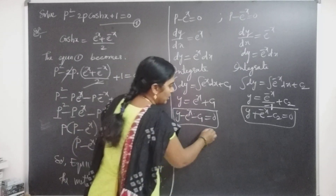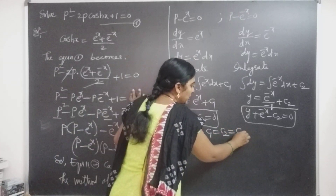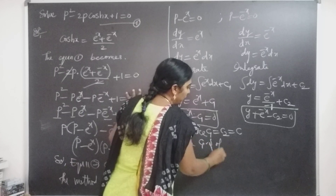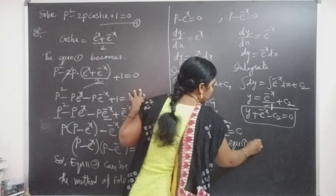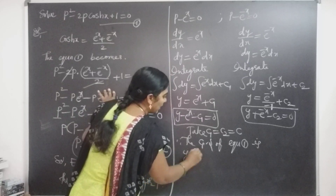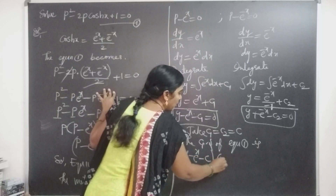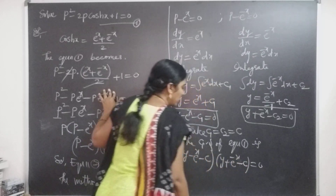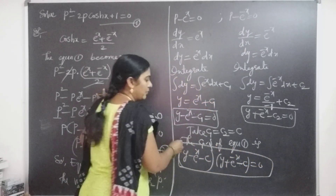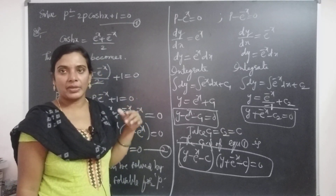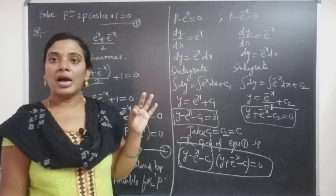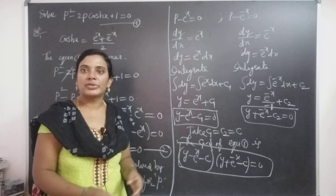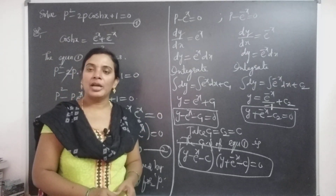For the required solution, we take the arbitrary constants c₁ = c₂ = c. The general solution of equation 1 is the product of the two solutions: (y - eˣ - c)(y + e⁻ˣ - c) = 0. This is the complete solution of the given equation. That is the procedure for solving using the solvable for P method. If you like this video, please subscribe to my channel and share with your friends.